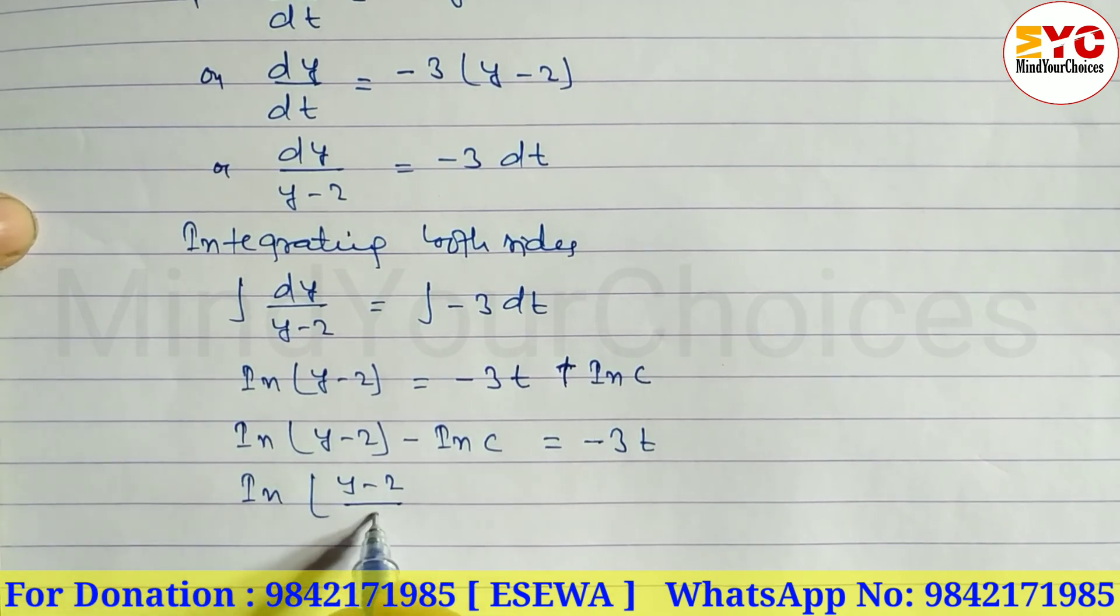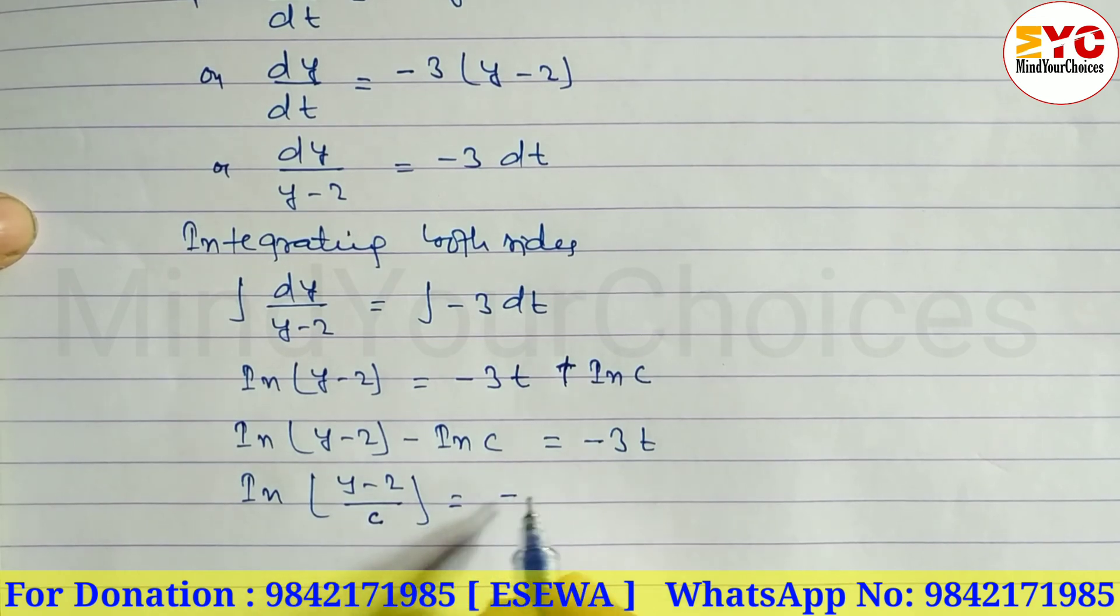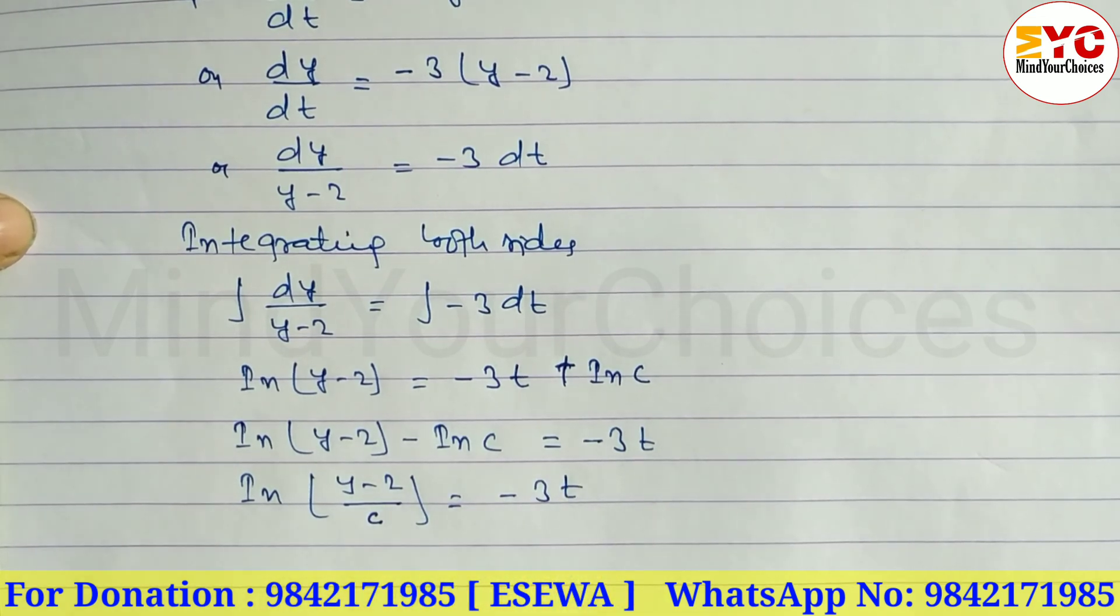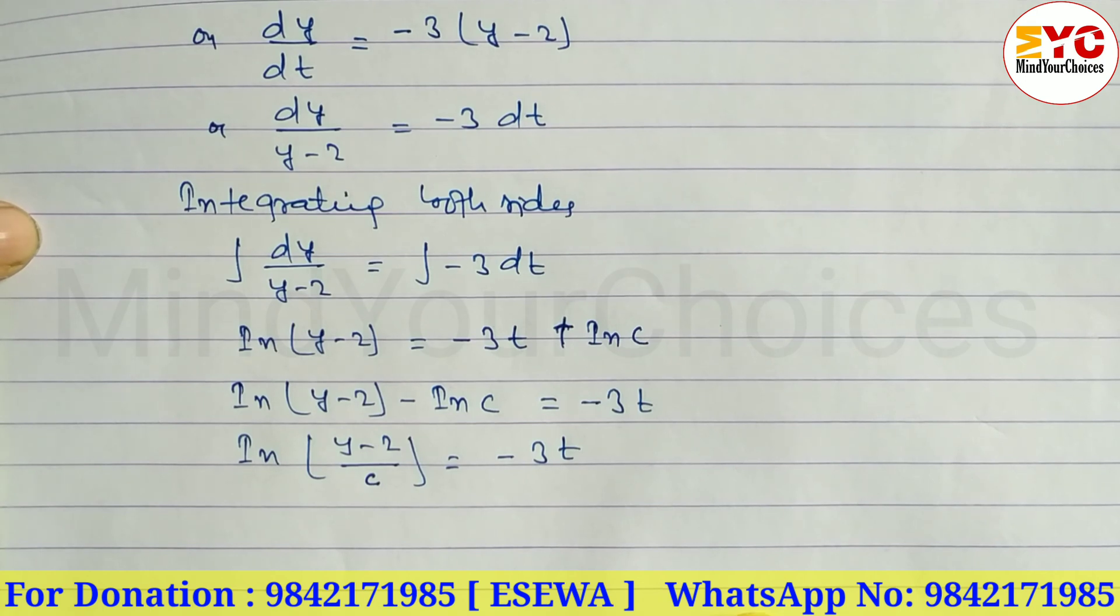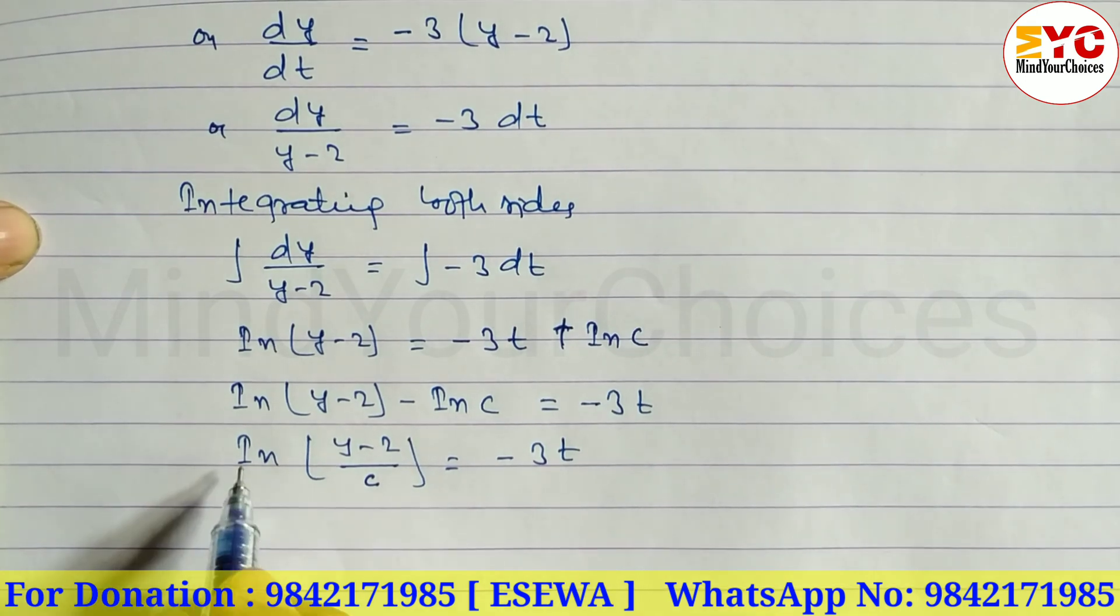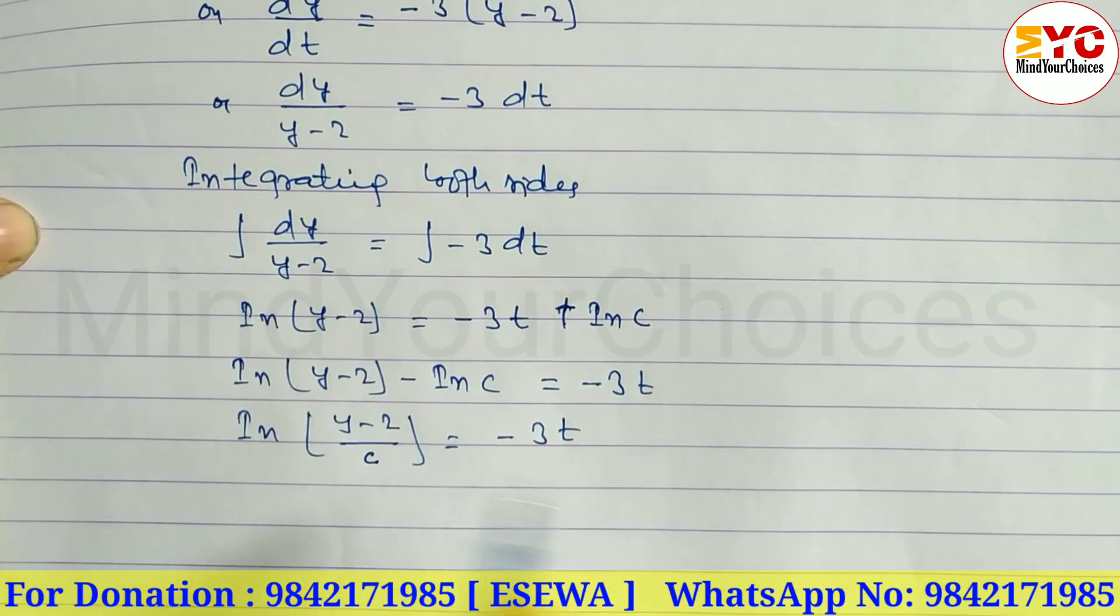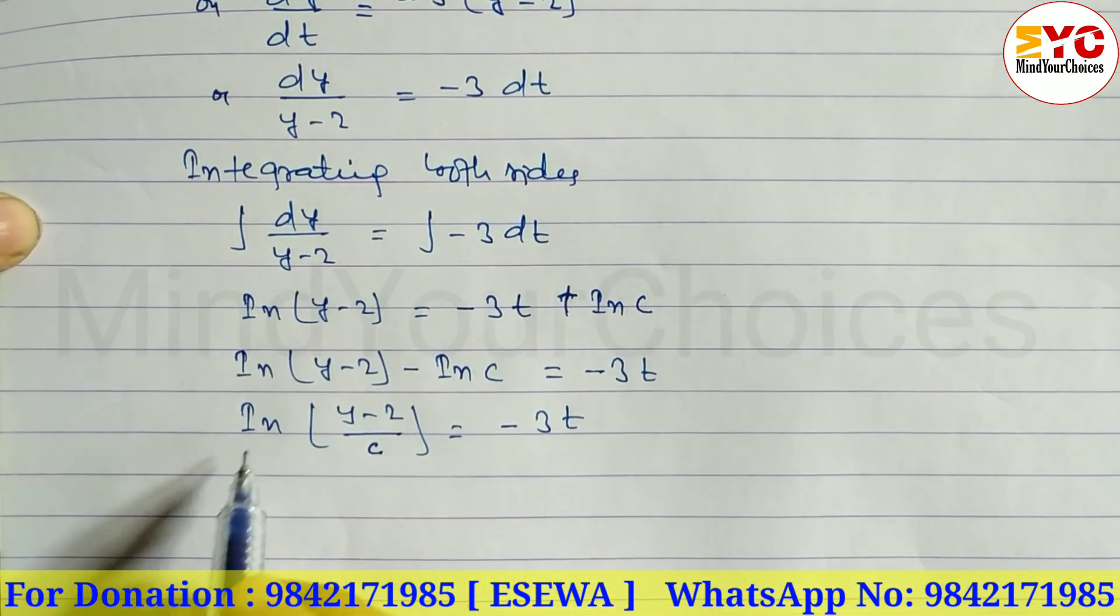Up to here. After that, what we have to do: to remove this log, we take exponential of both sides. Taking exponential both sides, exponential and log cancel.